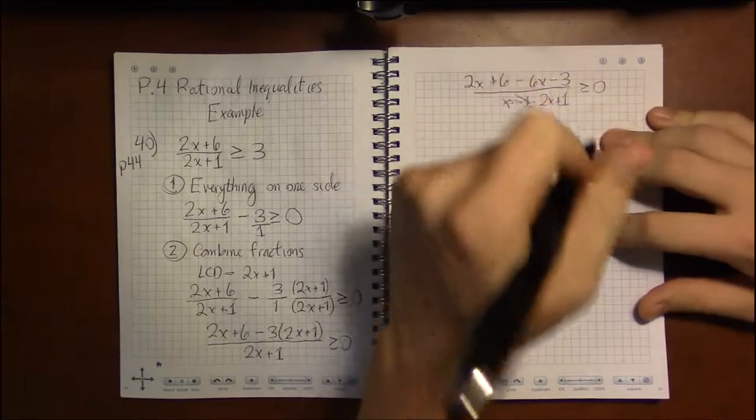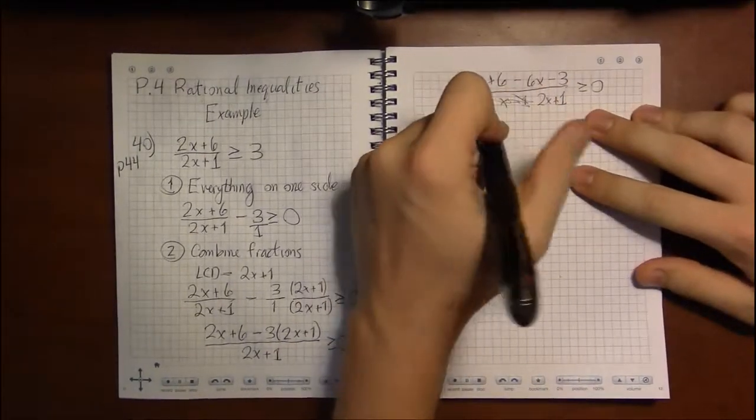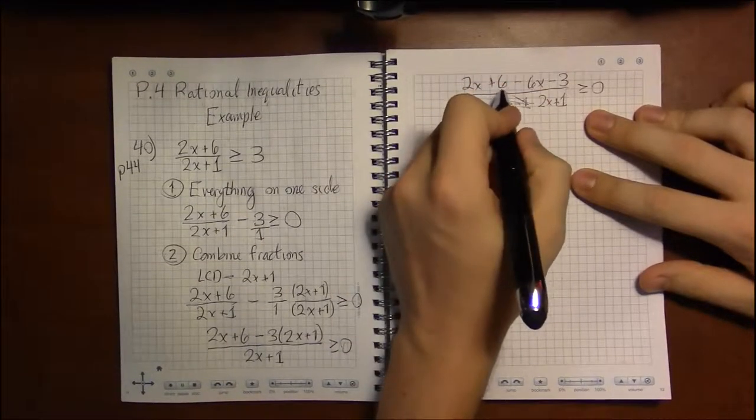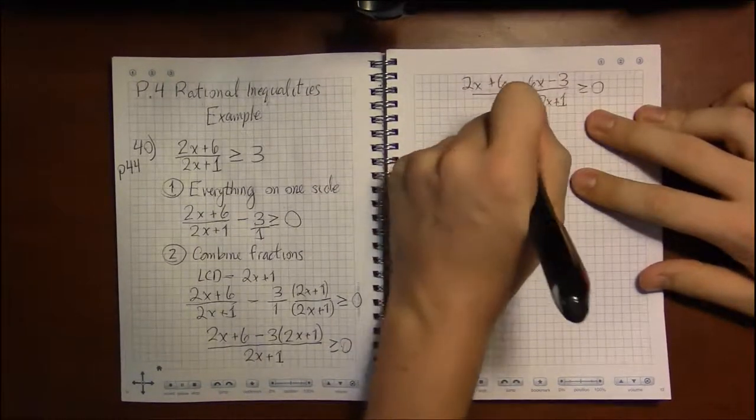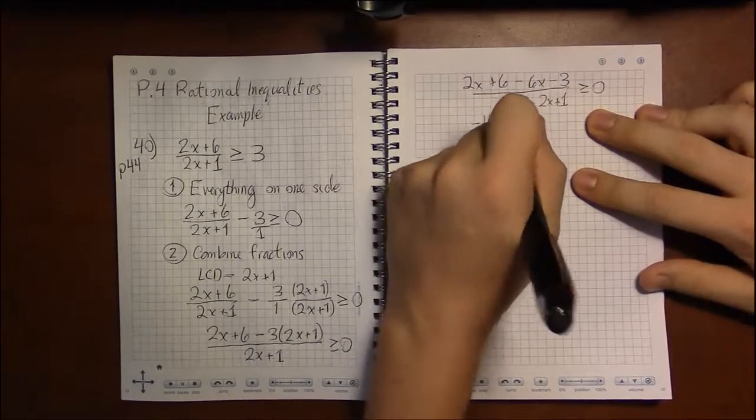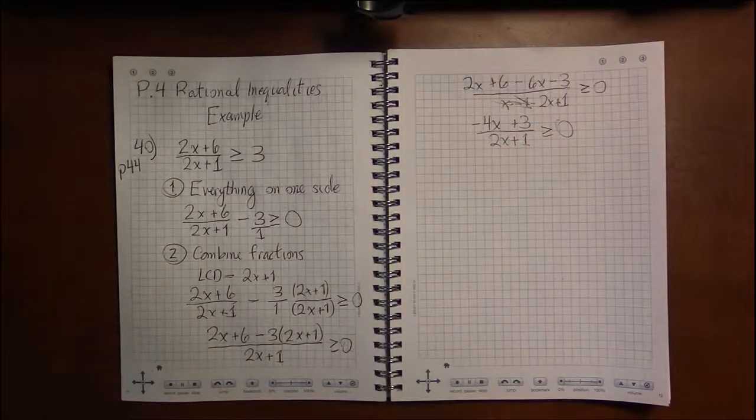Just so enthralled with this problem. Lost my mind. Minus 4x plus 3 divided by 2x plus 1. That's about as simple as I can get it.